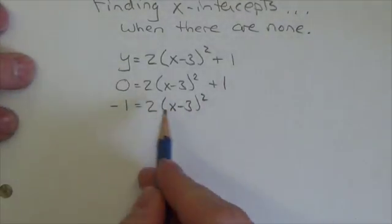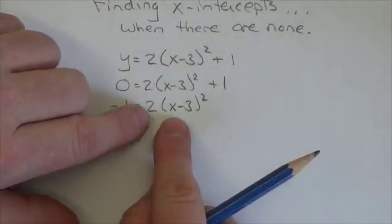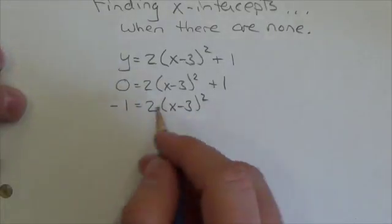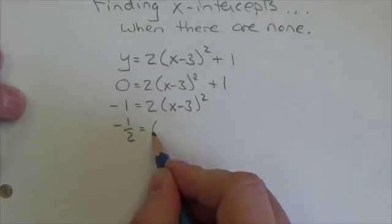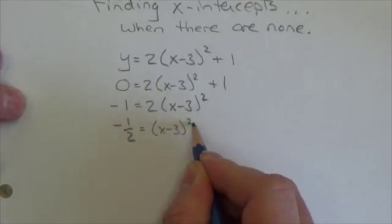Now again, my goal is still to get at that x there, so there's a coefficient out front I want to remove, so I'm going to divide both sides by 2. So I'll get negative 1/2 is equal to (x minus 3) squared.